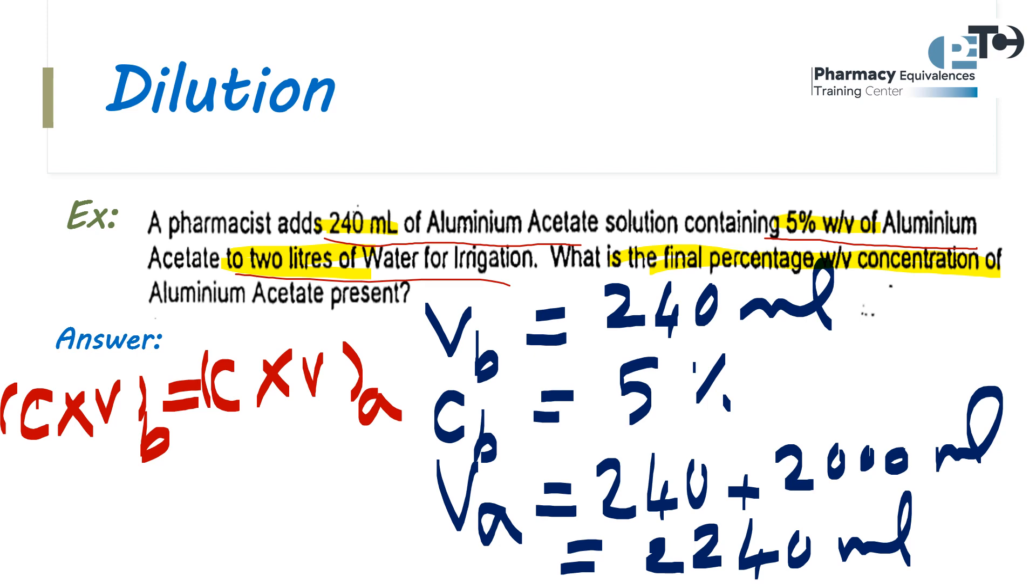Here we have concentration before, yes, it is 5%. Volume before, yes, it will be 240 mL. Concentration after, no, this is the wanted number. The volume after will be 2240 mL.